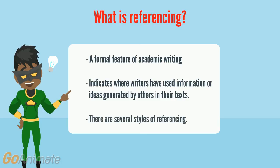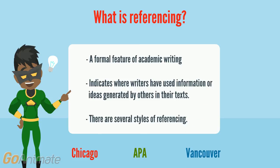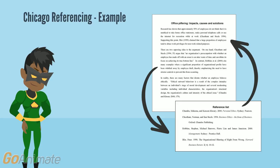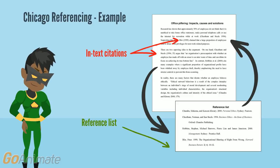There are several styles of referencing, for example, Chicago, APA, and Vancouver. Here is an example of the Chicago referencing style. The referencing style comprises two parts: the in-text citations and the reference list.